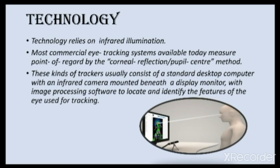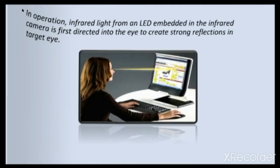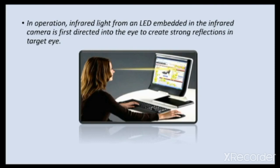Most commercial eye-tracking systems available today measure point of regard by the corneal reflection or pupil center method. These trackers usually consist of a standard desktop computer with an infrared camera mounted beneath a display monitor, with image processing software to locate and identify the features of the eye used for tracking. In operation, infrared light from an LED embedded in the infrared camera is directed into the eye to create strong reflections in the target eye.